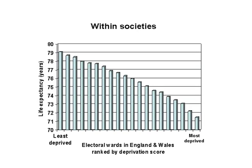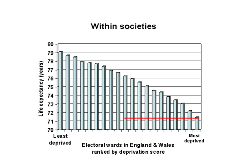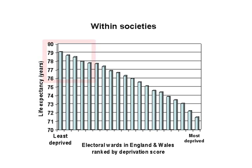This data is from England and Wales, and it's electoral wards. Here are the most deprived electoral wards, with very low life expectancy — about 71 and a half. And here are the richest, the least deprived electoral wards, with an average life expectancy for men and women of over 79. But look at the extraordinary regular social gradient across all those different levels of deprivation, wealth, and poverty.